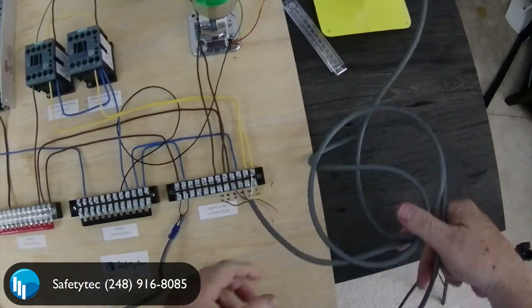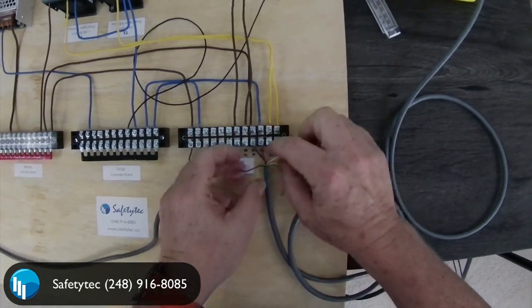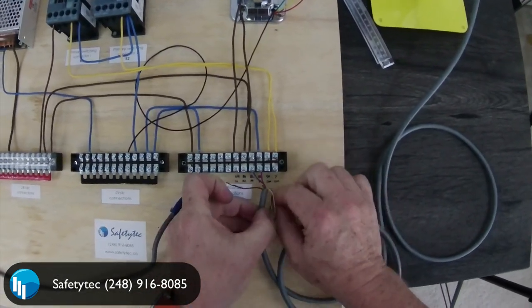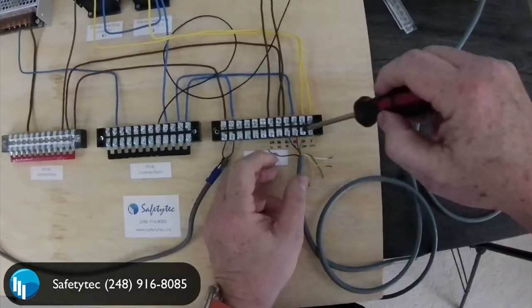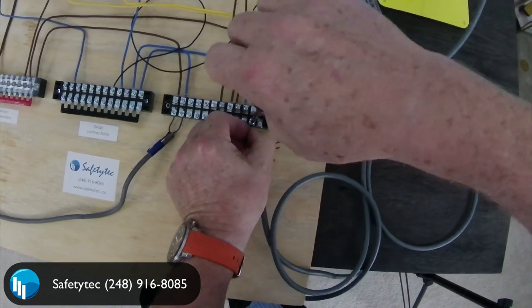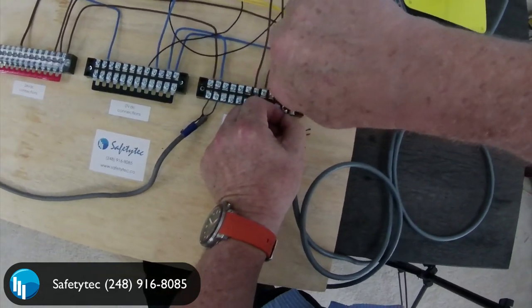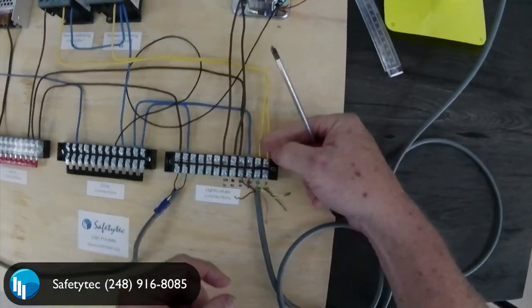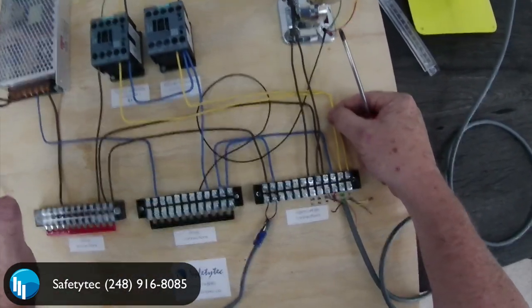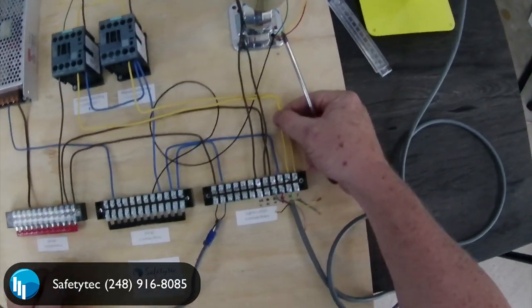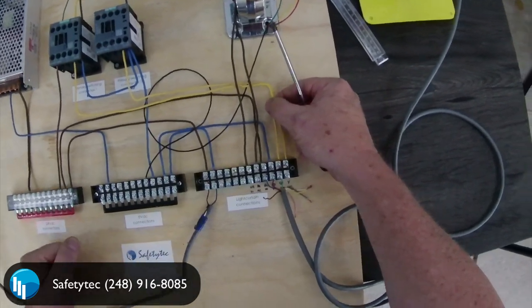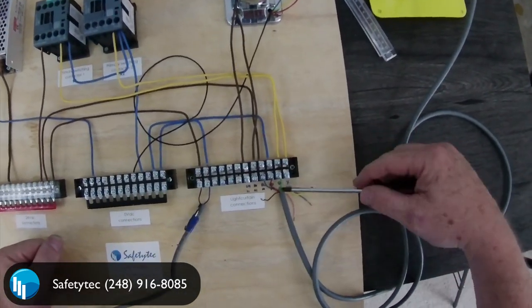All right, next thing to do is our EDM circuit, which is External Device Monitor. So we'll start with the green wire. Don't look at these colors as being compliant with any standards such as 60204 - this is purely for illustration purposes only.